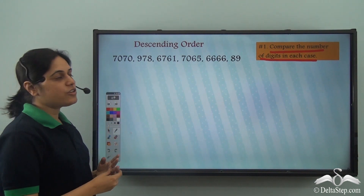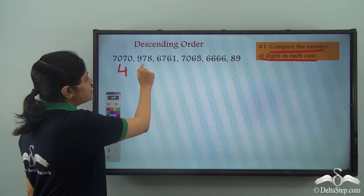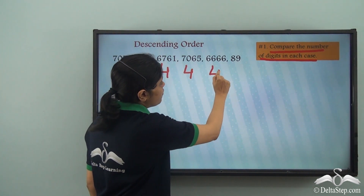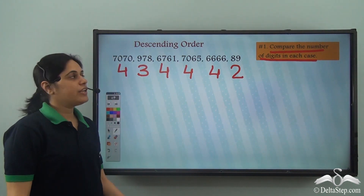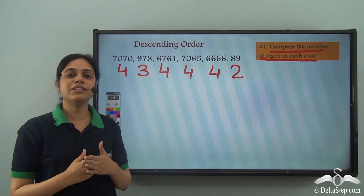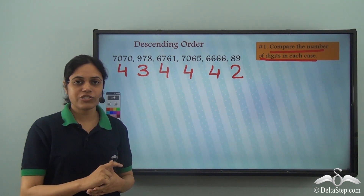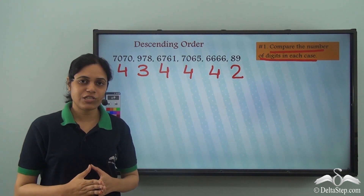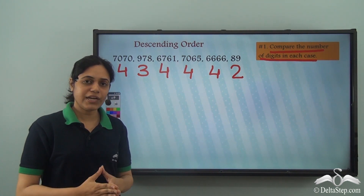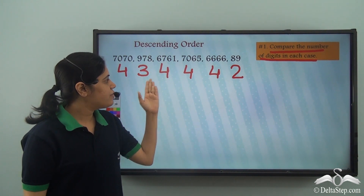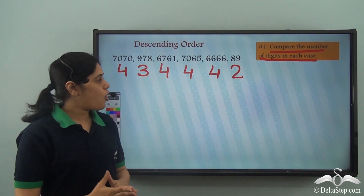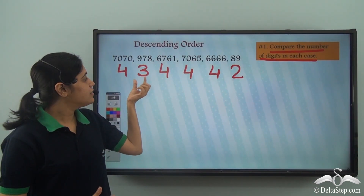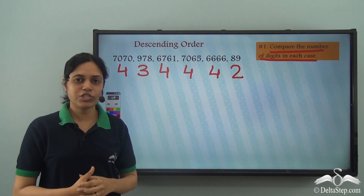So 7070 has four digits, this has three digits, four digits, four digits, four digits, and two digits. Now I need to arrange these numbers in descending order, that is from the largest to the smallest. The number with the highest number of digits will be greater than the number with fewer digits. So all the four-digit numbers will be bigger than this three-digit number and the two-digit number.